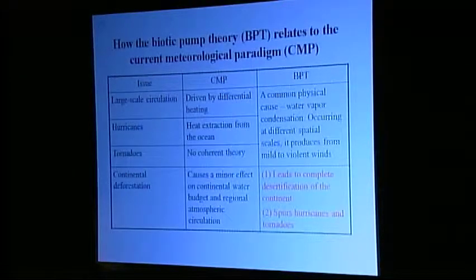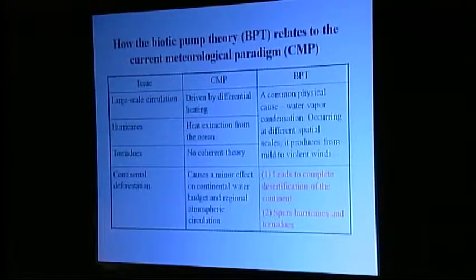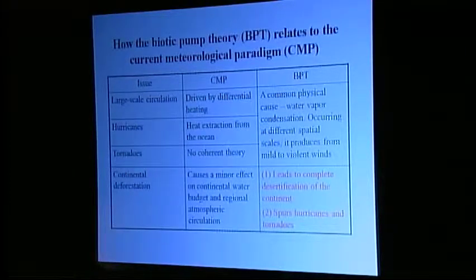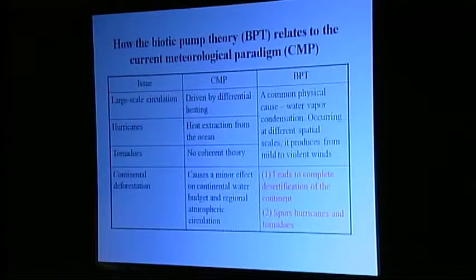Therefore, in contrast with the prediction of modern global circulation models that do not take the considered effects of condensation into account, the new theory predicts that deforestation will have a major effect on both the hydrological cycle on land and on the frequency of occurrence of hurricanes in the adjacent ocean. We also note that the proposed approach gives a unified physical description to all the major circulation events, both compact and large scale. In the meantime, the modern meteorological paradigm invokes a divergent range of mechanisms, and even in this case does not provide a satisfactory quantitative explanation for many observed patterns.